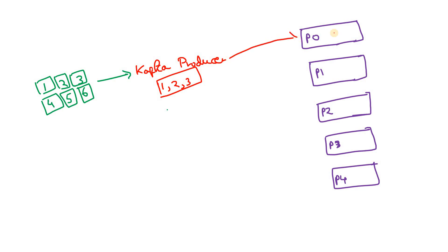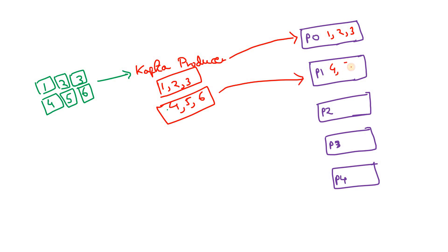Suppose based on batch.size or linger.ms, the first batch created contains messages 1, 2, 3. The producer publishes this entire batch to partition 0. Then the next batch — messages 4, 5, 6 — is accumulated and published to the next partition. In this approach the producer sticks to one particular partition for an entire batch, rather than distributing individual messages across different partitions as in round-robin. This makes it faster with respect to time, since the complete batch is written to one place only.